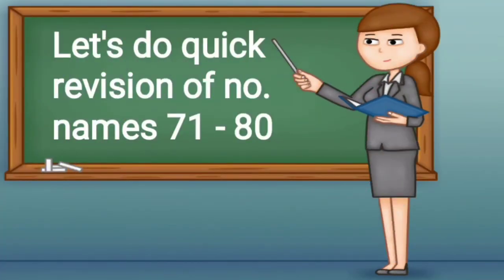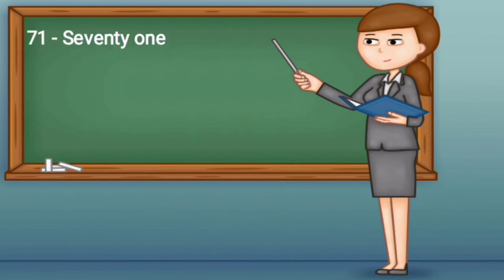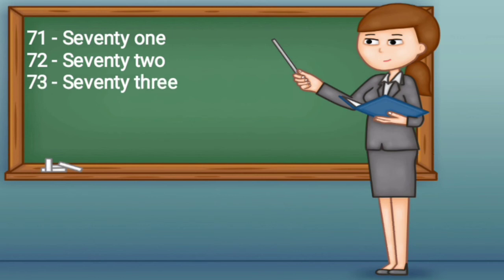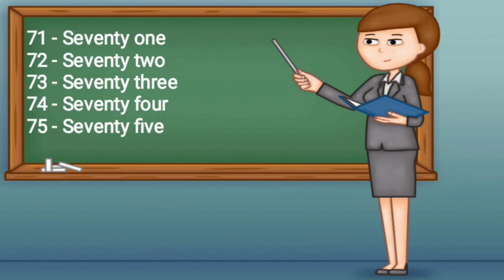Let's do a quick revision of number names 71 to 80. 72 S-E-V-E-N-T-Y-T-W-O 72. 73 S-E-V-E-N-T-Y-T-H-R-E-E 73. 74 S-E-V-E-N-T-Y-F-O-U-R 74. 75 S-E-V-E-N-T-Y-F-I-V-E 75.